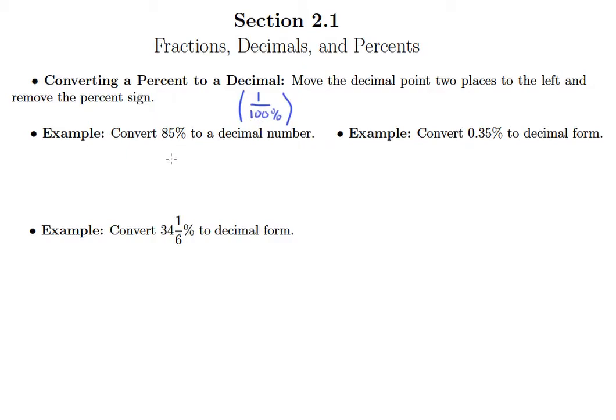So here what I want us to remember is that dividing by 100 just simply means we'll be moving the decimal point in our percent two to the left. And so the procedure that we can use that's a little bit of a shortcut when we're converting to a decimal number is that we're going to move the decimal point two places to the left and then simply remove the percent sign.